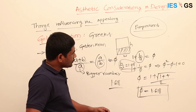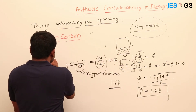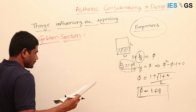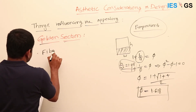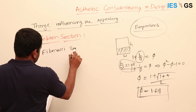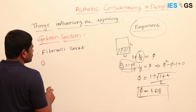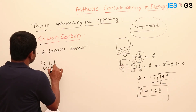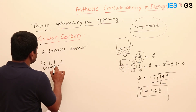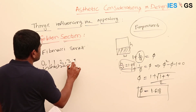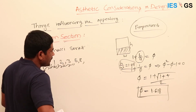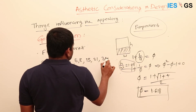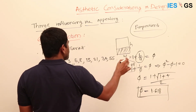This also closely resembles the Fibonacci series. What is the Fibonacci series? You start with 0 and 1. The next number is the sum of the previous two: 0 plus 1 is 1, then 1 plus 1 is 2, then 1 plus 2 is 3, then 5, 8, 13, 21, 34, 55 — and it keeps going. The formula is: Fn equals Fn−1 plus Fn−2.